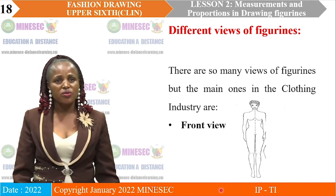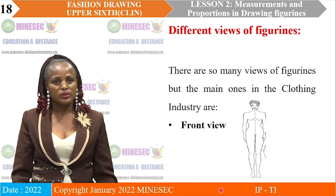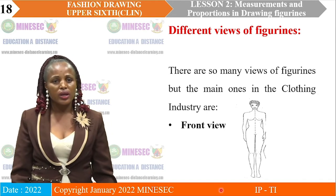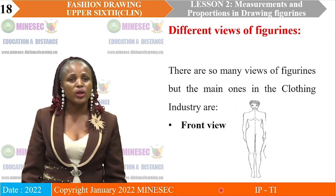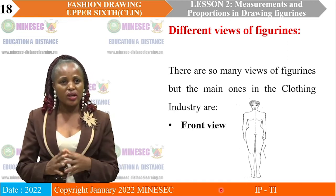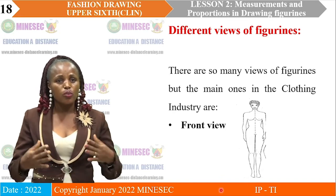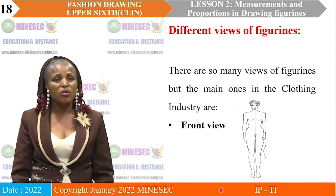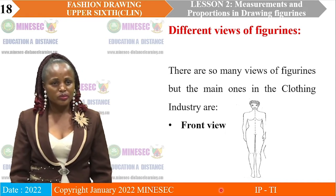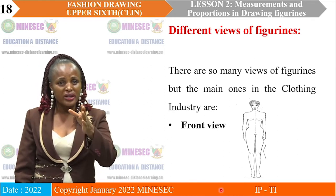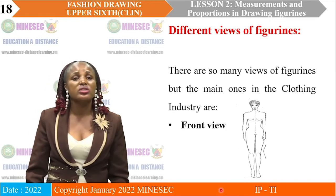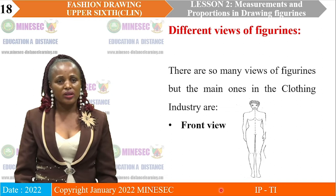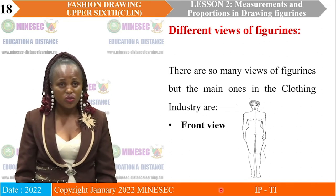We are going through the different views of figurines. There are so many views, but the main ones in the clothing industry are the front view. As you see the figurine standing in front view — the one on the board — you can fully see all the eyes, you can see the breasts in full, and all the body parts are showing correctly. That is a front view figurine. Even you yourself, if you stand with the same posture, someone facing you directly will be able to see all your body parts.